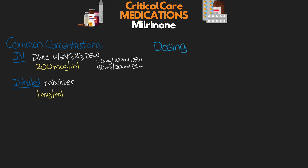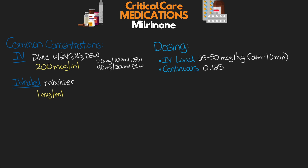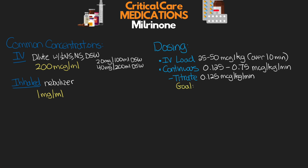For common dosing when giving this medication IV, we typically start with a loading dose of 25 to 50 micrograms per kilogram, pushed slowly over 10 minutes. Then we start our continuous infusion at a rate of 0.125 to 0.75 micrograms per kilogram per minute, titrated based on hemodynamic response — typically by 0.125 mcg/kg/min increments — targeting either a desired cardiac index or systolic blood pressure goal. For inhaled administration for pulmonary arterial hypertension, the dose is typically 2.5 to 5 milligrams every six hours via nebulizer, or sometimes as a continuous infusion nebulizer, at a 1 milligram per mL concentration.